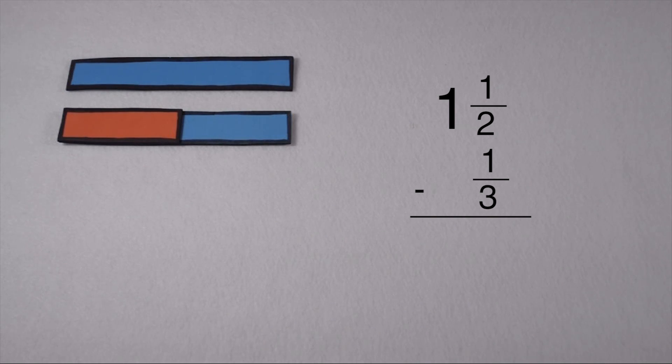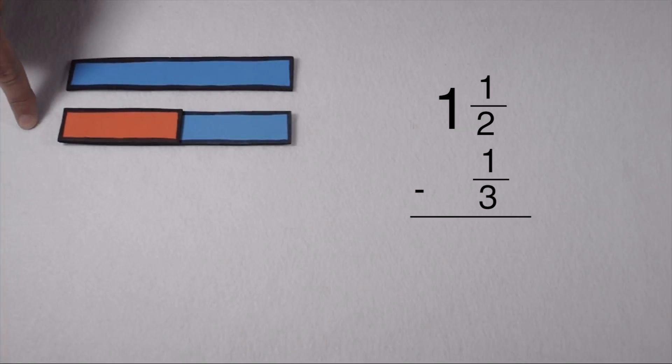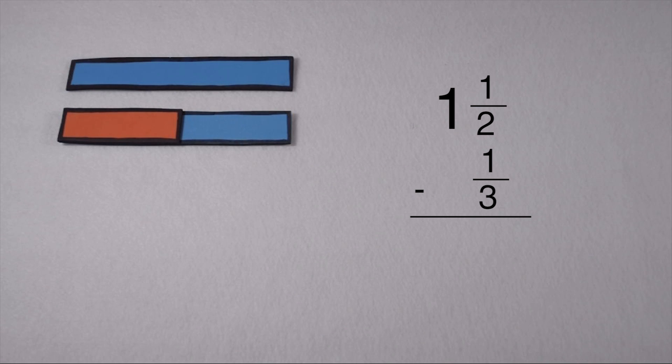We're subtracting 1 and 1 half minus 1 third. The first thing we notice about our fractions is that they don't have a common denominator. This means our one piece for 1 half is going to be a different size as our piece would be for 1 third. So the first thing we need to do is find a common multiple of 2 and 3 so we can create equivalent fractions with a common denominator.